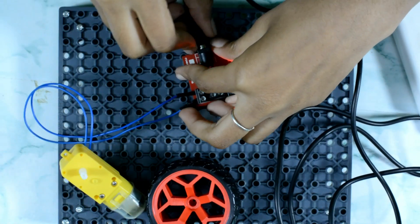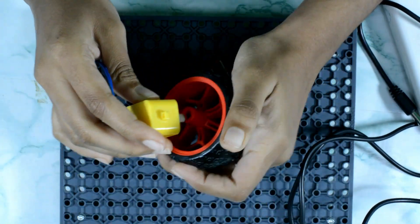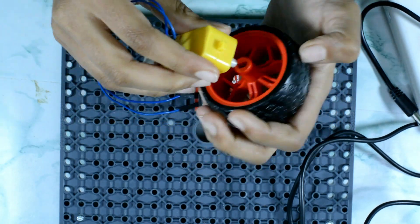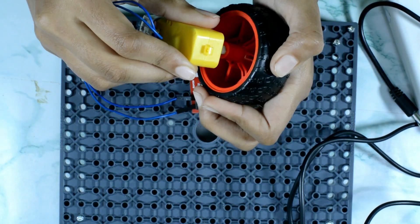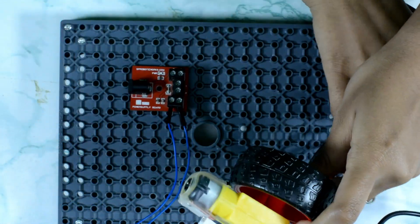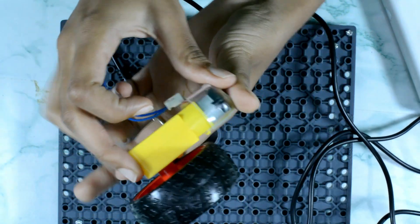Now let me disconnect this and connect the wheel to the shaft. Yes, it's done. Now what we're going to do is let's connect the battery to this power supply board. Before that, let's hold the motor safely.